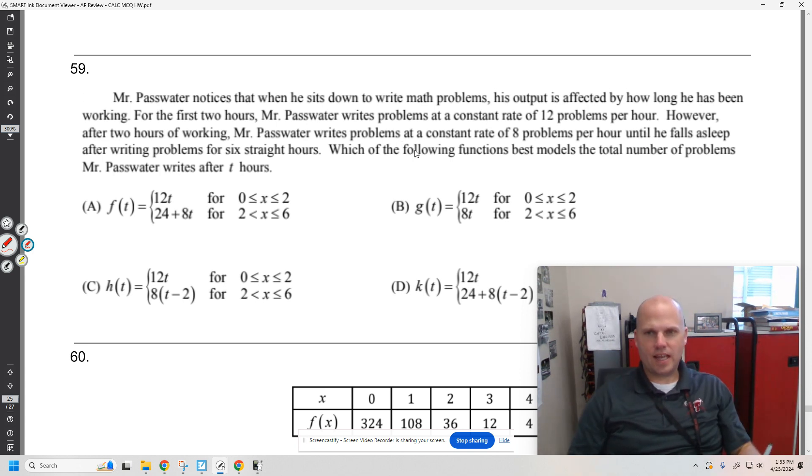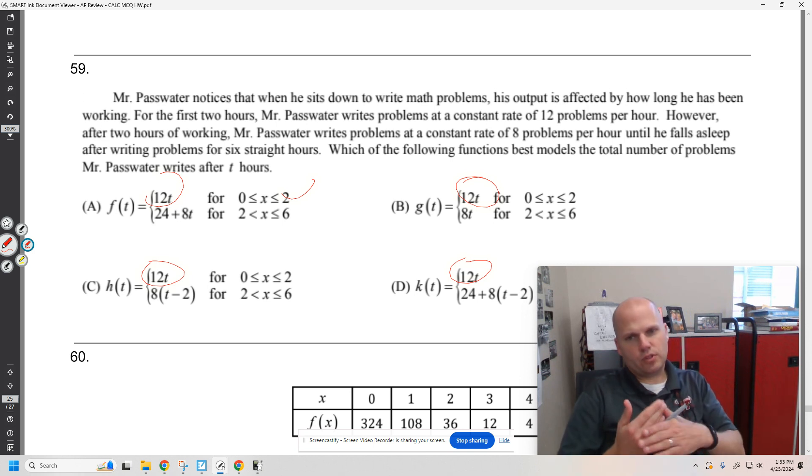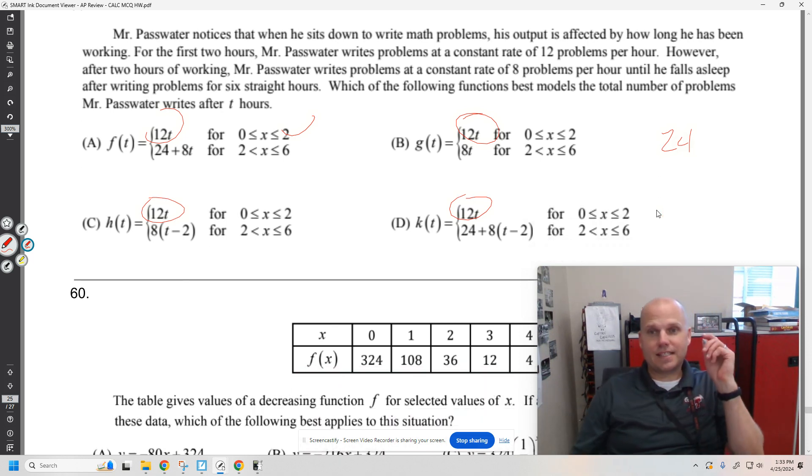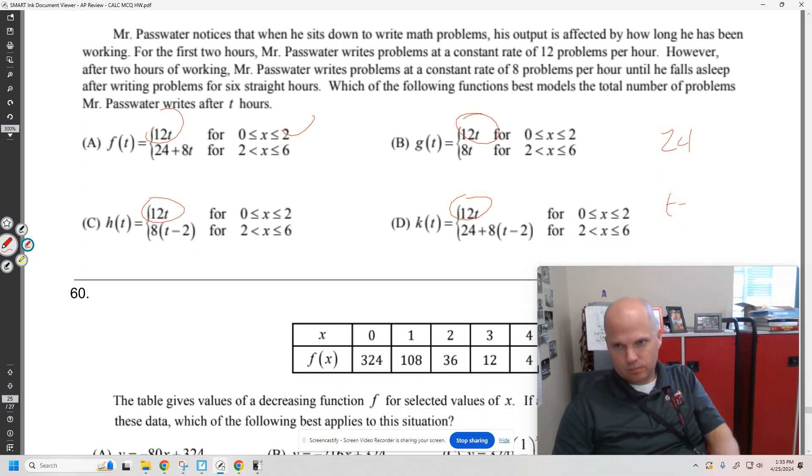Total number one. So it's eight, 12 problems per hour for the first two hours. Okay, cool. Now that means after two hours, I have 24 problems. Then I need to add to the total amount of problems. Okay. Let's say I worked three hours. If I worked three hours, I had two hours of 12 problems per hour plus one hour of eight. I got 24 plus eight is just 32. Okay. Look.